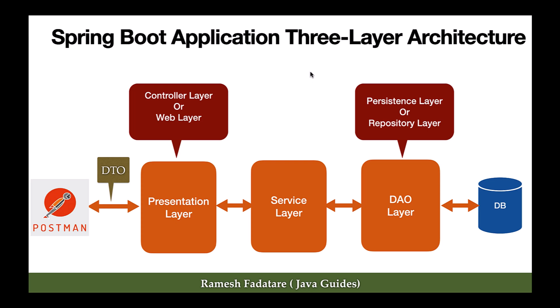Three-layer architecture is one of the commonly used architectural patterns in Spring Boot applications to organize the code base and separate concerns. When we create a Spring Boot application, we create three packages corresponding to the three layers: a controller package for all Spring MVC controllers, a service package, and a repository package for all Spring Data JPA repositories. We'll see how to create this package structure in the upcoming lectures.